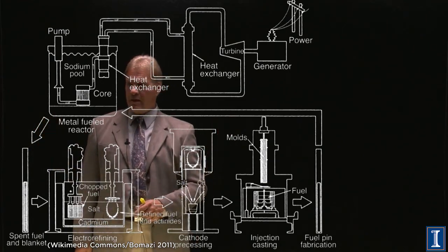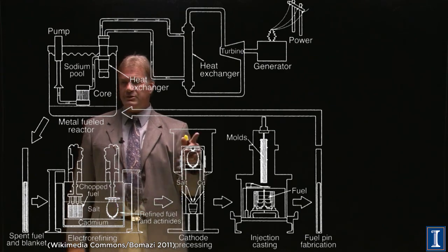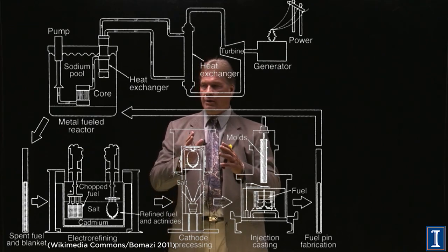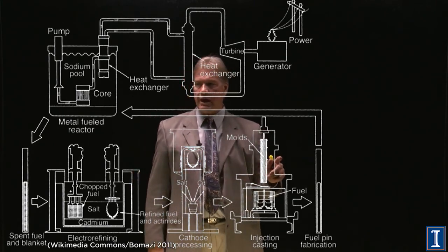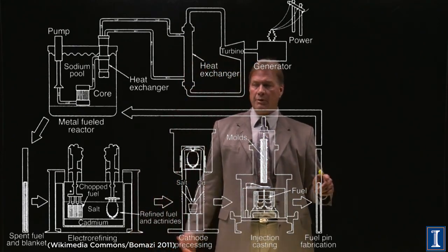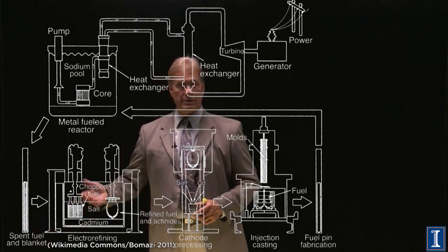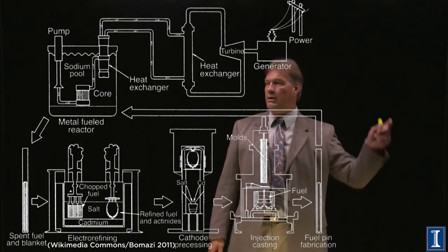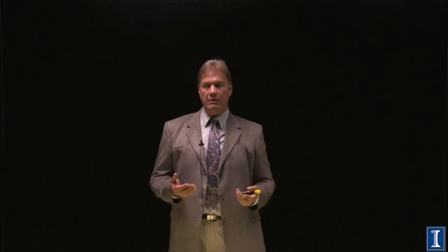Once the fission products are separated from the transuranics, the transuranics can be heated so that any extra molten salt and other materials come off, leaving the heavier elements behind. These are then recast into a new fuel rod — with additional uranium-238 added to make up the volume. The fission products that were separated need to go to the high-level waste repository, but only for a few hundred years, not tens of thousands. The new fuel rod goes back into the reactor core. This is the concept for the Integral Fast Reactor, and it would likely be the next generation of commercial breeders whenever we get to that point.